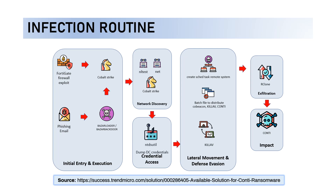Looking at the infection routine, it starts with initial entry and execution — possibly by exploiting the Fortigate firewall or using phishing emails. This is followed by credential access by dumping credentials from NTDS using the NTDS utility. Then comes network discovery, lateral movement, and defense evasion — creating scheduled tasks and batch files to distribute tools. Finally, exfiltration is performed using a tool called rclone, after which the data has already been exfiltrated by Conti.